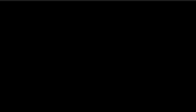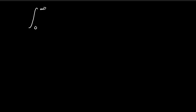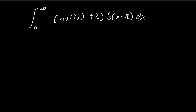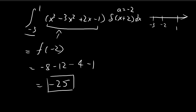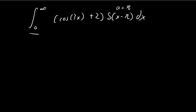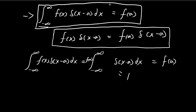For part b, we have the integral of cos(3x + 2) times the Dirac delta function δ(x - π) dx. We apply the same formula. In this case a = π, and although the bounds do not go from -∞ to +∞, the formula still applies because a = π lies between 0 and infinity.